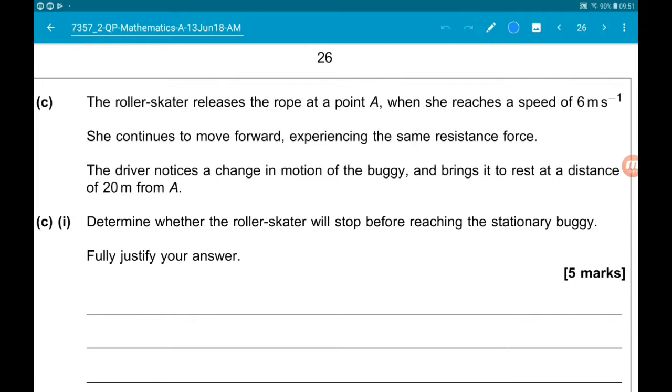Okay, part C1 is a nice five marker. So the roller skater releases the rope at point A when her speed reaches six meters per second. She continues to move forward experiencing the same resistance force. The driver notices a change in motion of the buggy and brings it to rest at a distance of 20 meters from A.